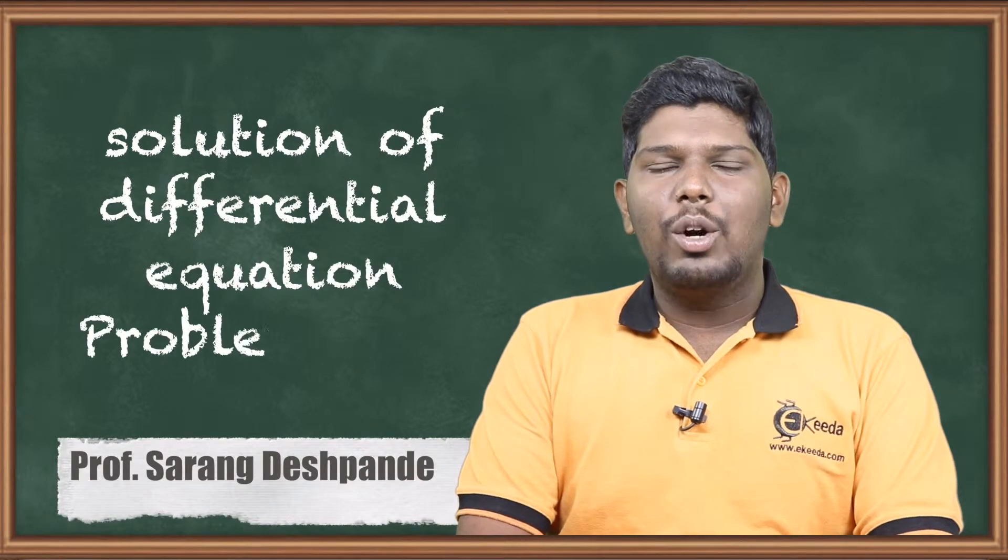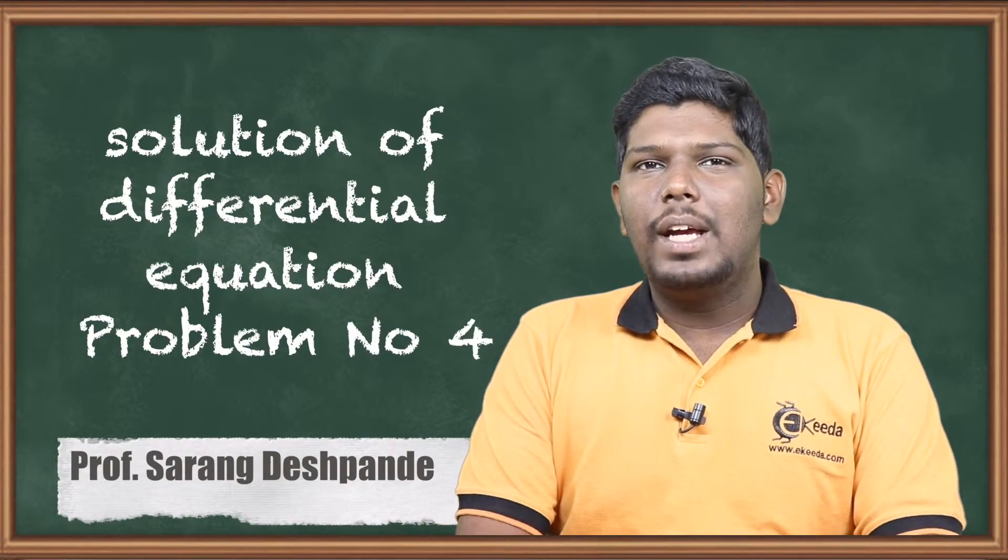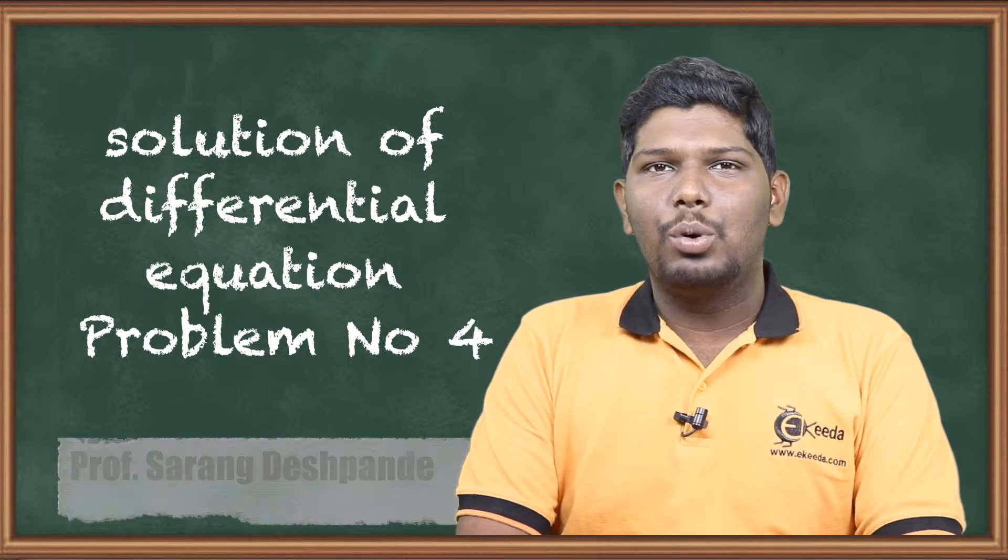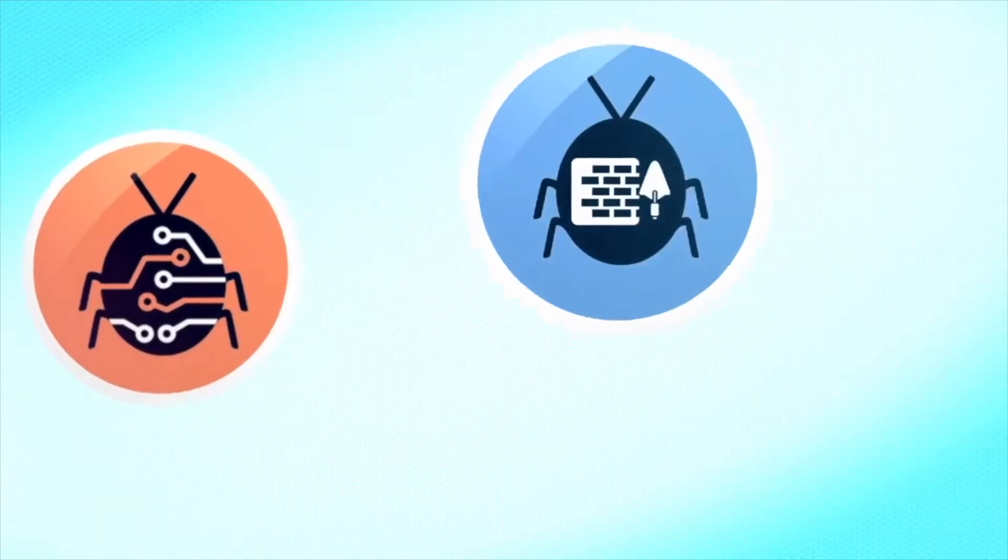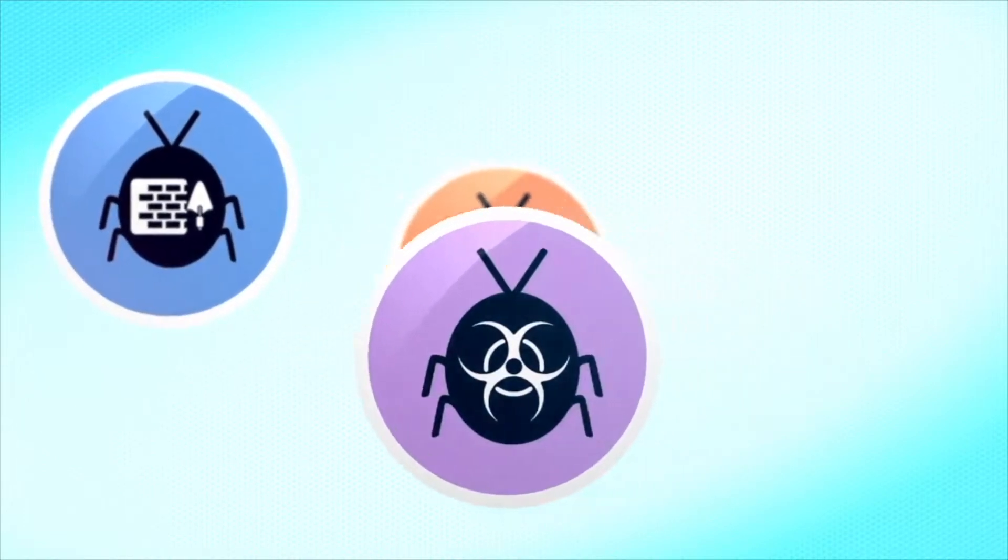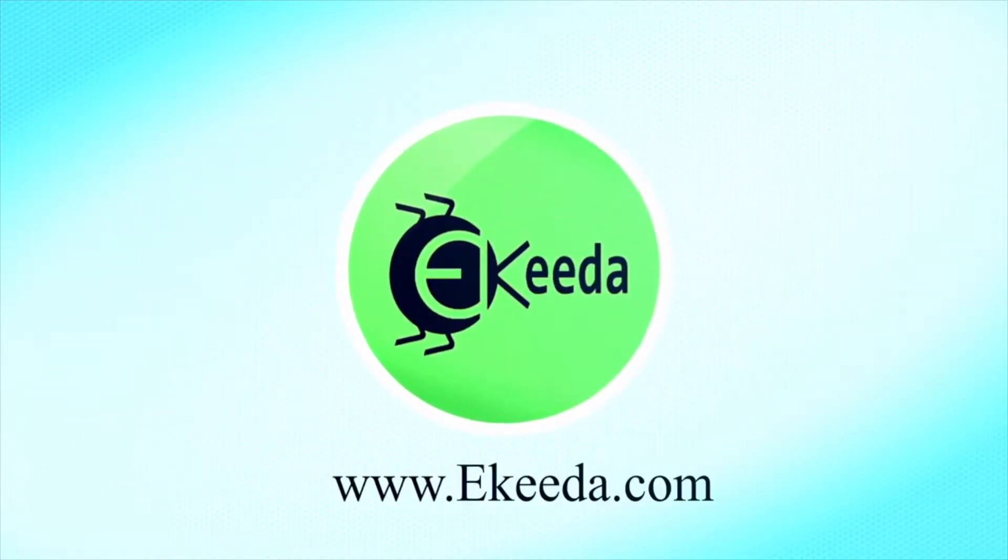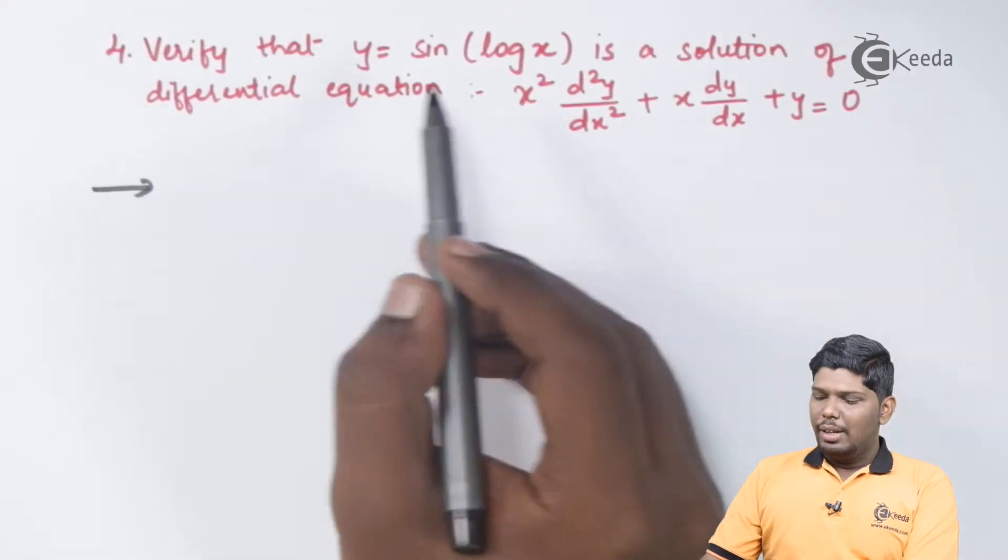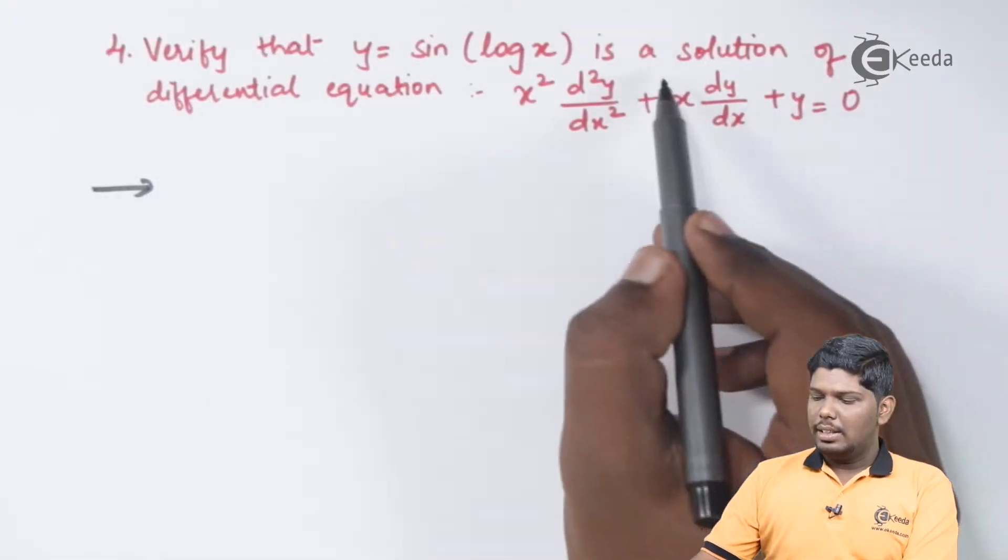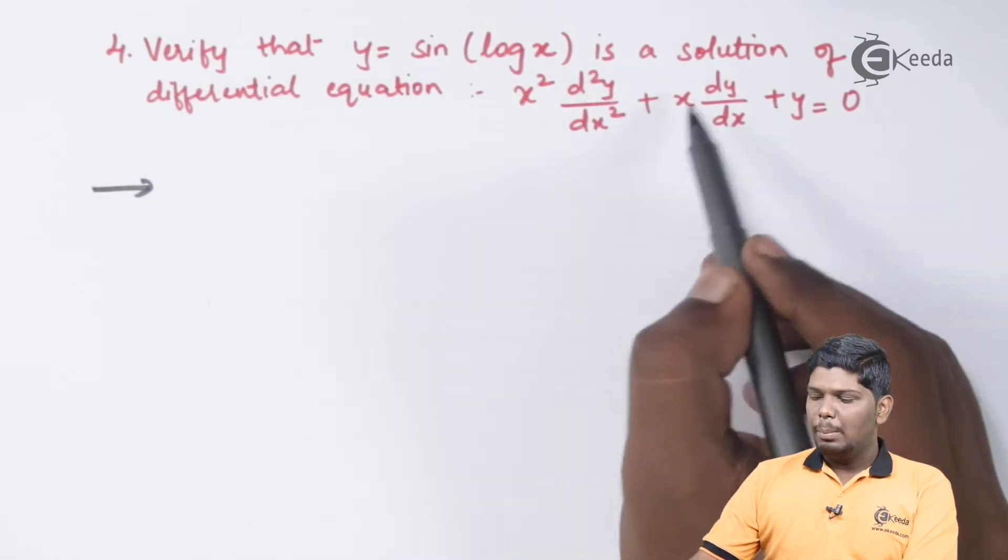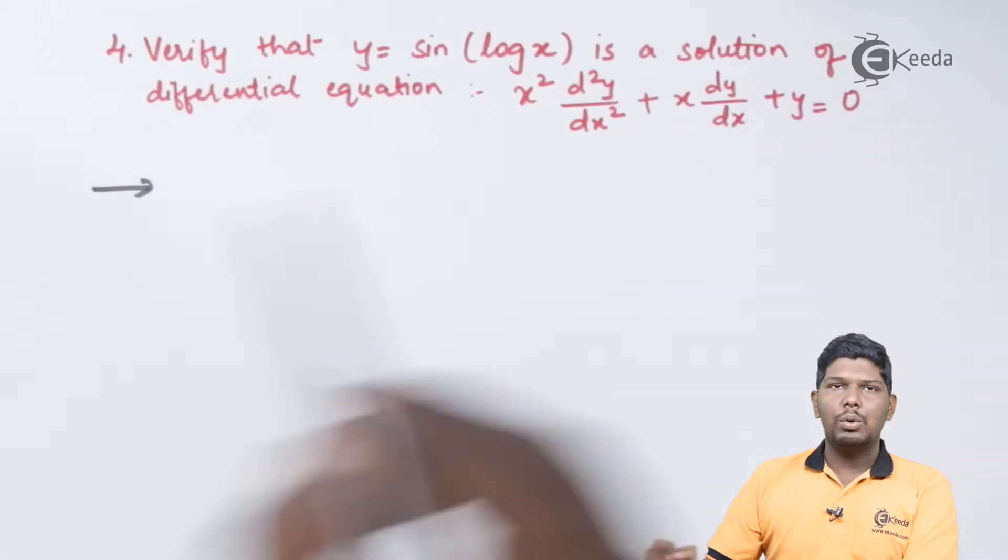Hello friends, in this video, we are going to see one more problem which is based on solution of differential equation. Let us start with problem number 4. Verify that y equals sin of log x is the solution of differential equation x square d2y by dx square plus x dy by dx plus y equals 0.